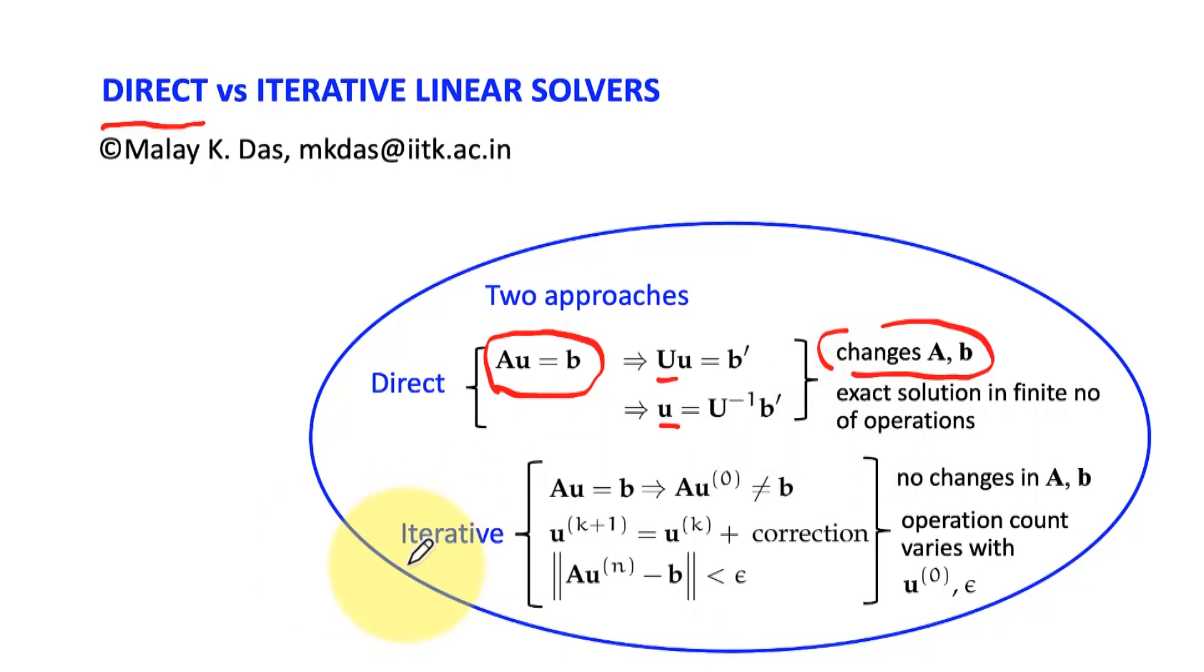In contrast, when we come to iterative solvers, what we do is we start with an initial guess of the unknown. We do not do any modification in the matrix A or vector b. We find a u^(0), where u^(0) is the initial guess, and in most practical cases, of course, this Au^(0) is not equal to b. If it is equal to b, then our initial guess is the final solution, which is absolutely unlikely to happen. Now depending on the difference between Au and b, we calculate some sort of a correction and then we use this correction to update the unknown u.